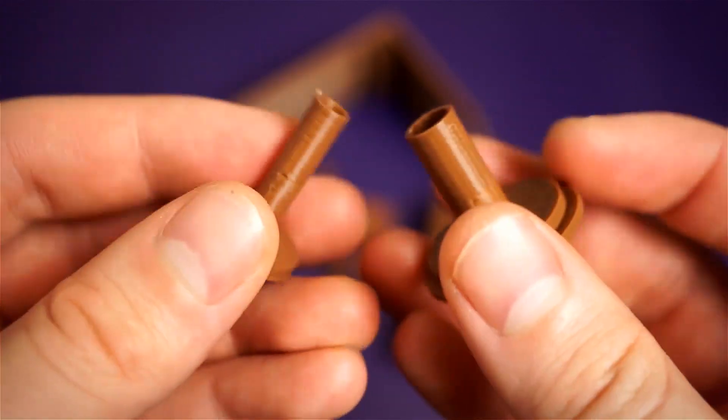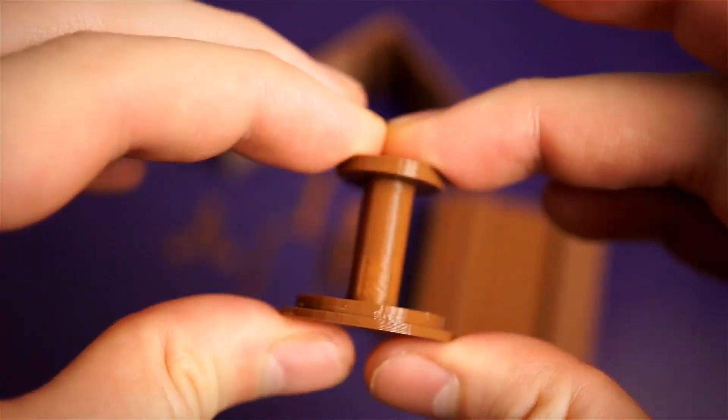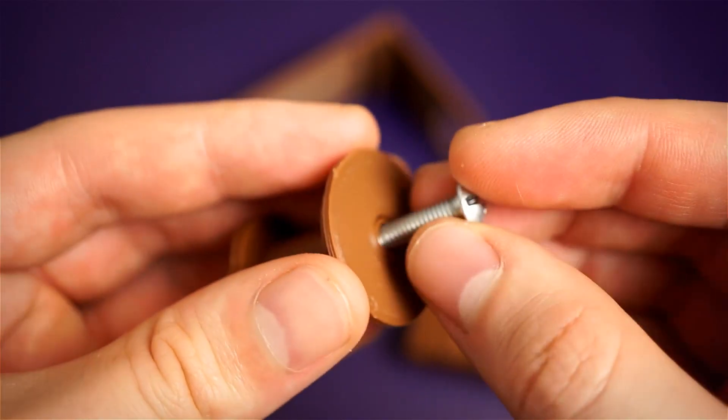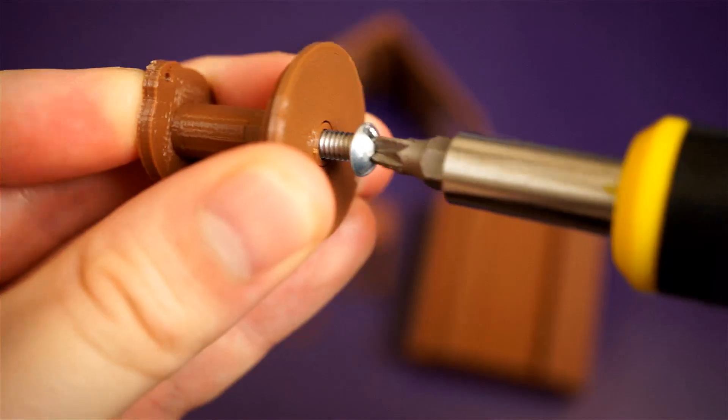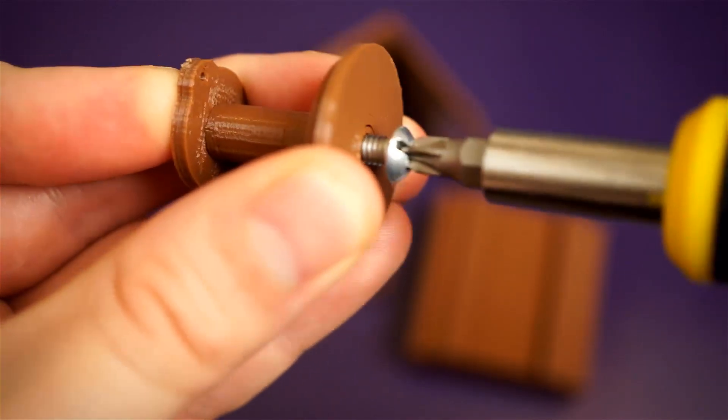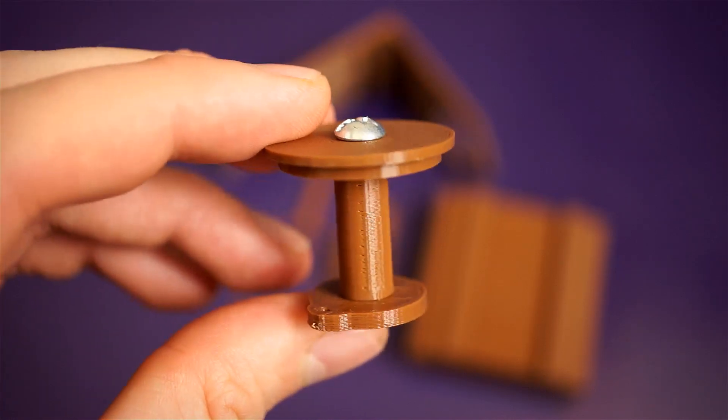These two pieces will fit together to hold our electromagnet. The screw at the top serves two purposes. First it helps hold the top and bottom together, but it also helps amplify our electromagnet since it has iron in it.